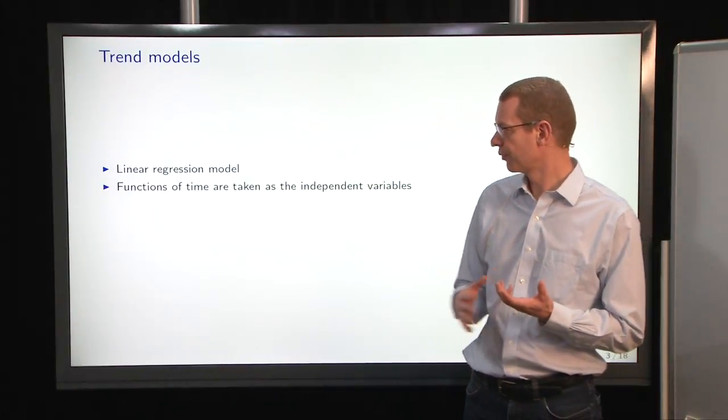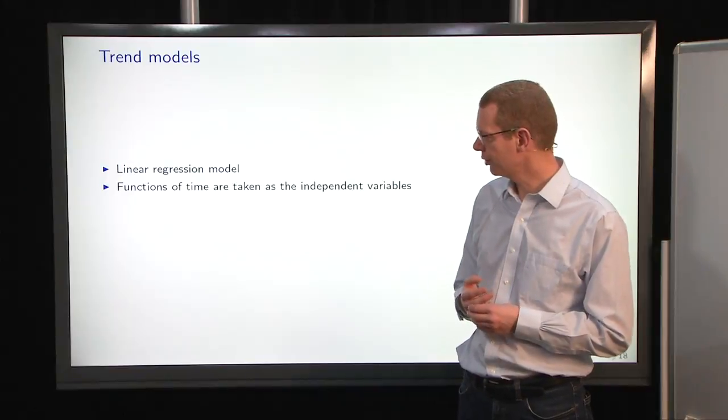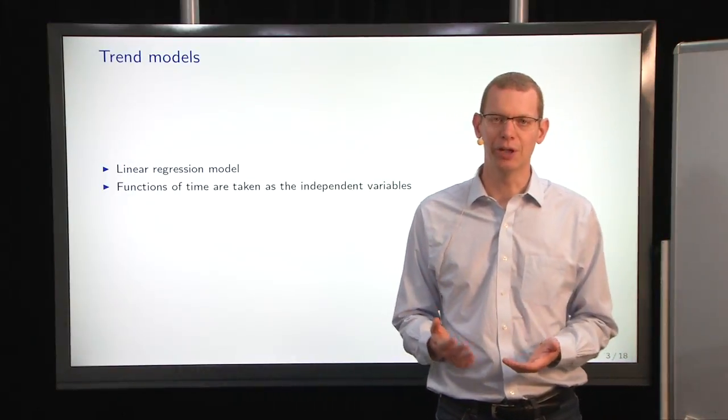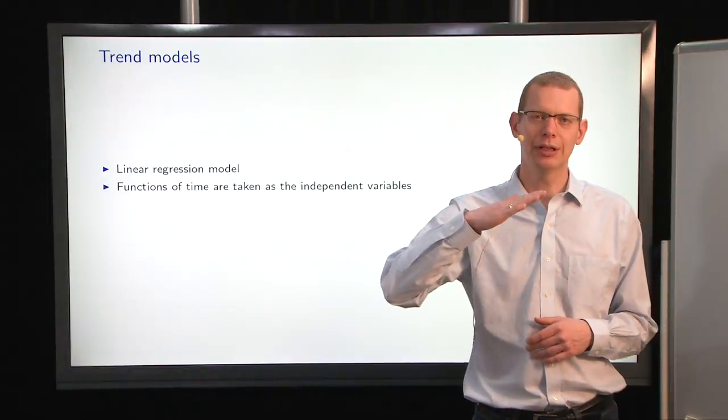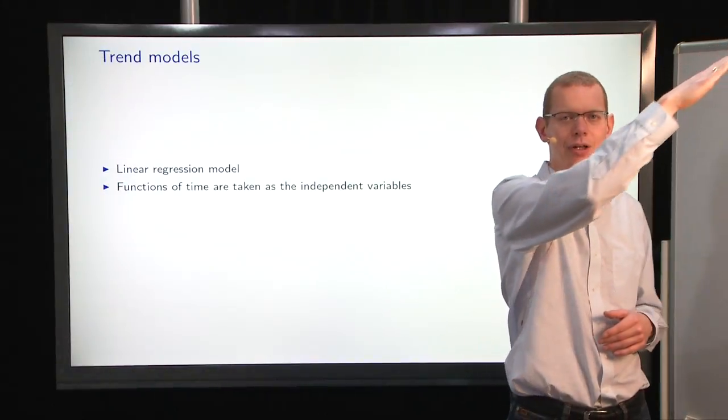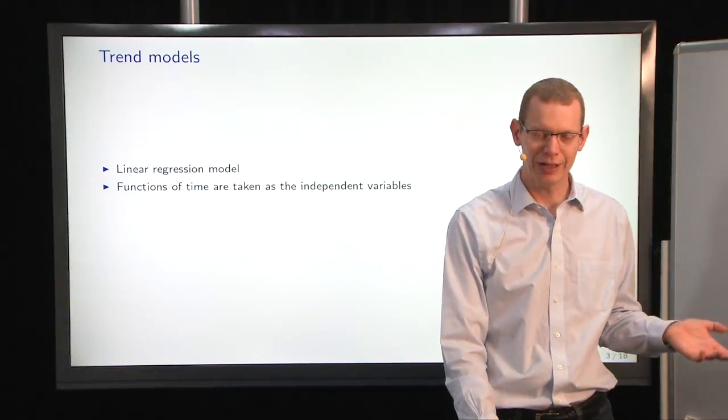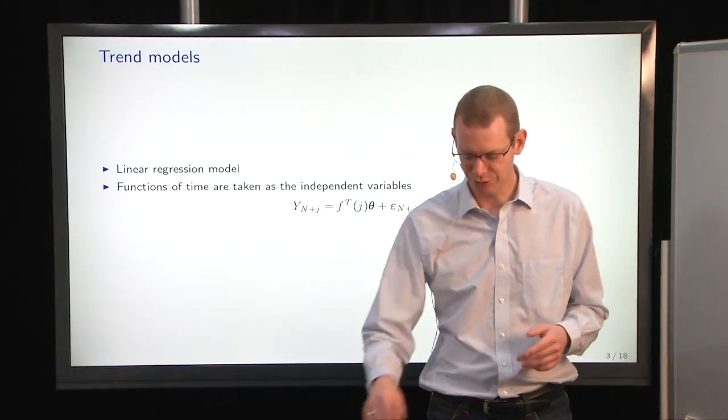Trend models are basically linear regression models where you take functions of time as the independent variables. If you have something that is growing steadily over time, you can just use the time point as your predictor.